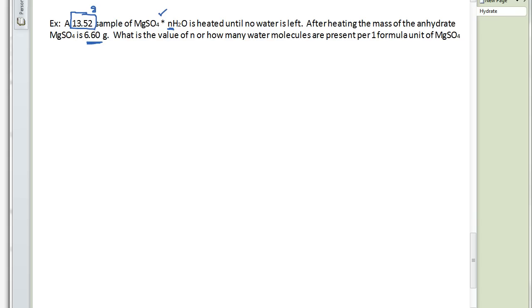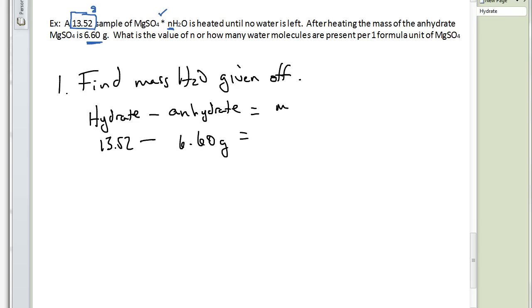We can figure this out. So, step one here. What we're going to do in step one is we want to find the mass of the water given off. So what we're going to do is we're going to start with our mass of our hydrate. And the mass is 13.52 grams given to us in the problem up there. And we're going to subtract out the mass of the anhydrate, which was 6.60 grams. When we subtract those two, what we get is the mass of the water that was given off. We get 6.92 grams of water. That's step one. We always want to find the mass of the water.